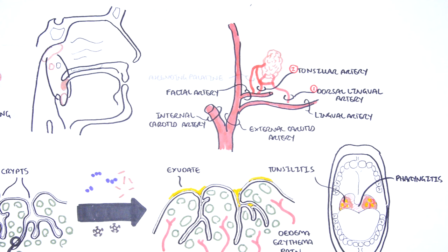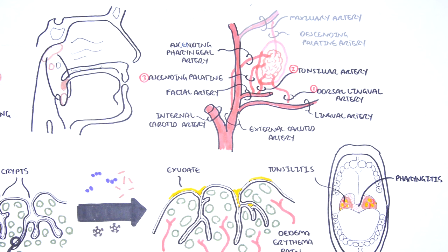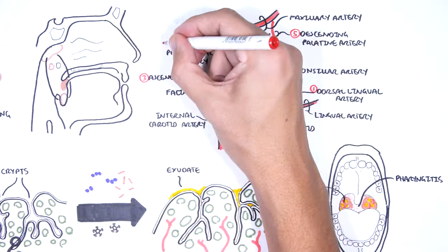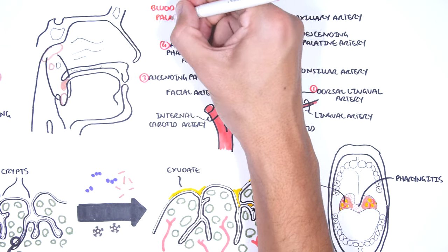The ascending palatine artery from the facial artery. The ascending pharyngeal artery from the external carotid. And then the superior tonsillar artery, basically the descending palatine branch of the maxillary artery. So these are the five main arteries that supply the palatine tonsils.